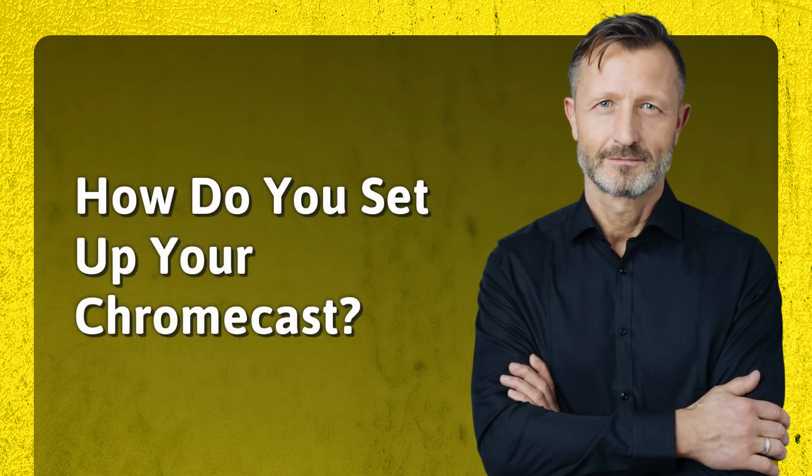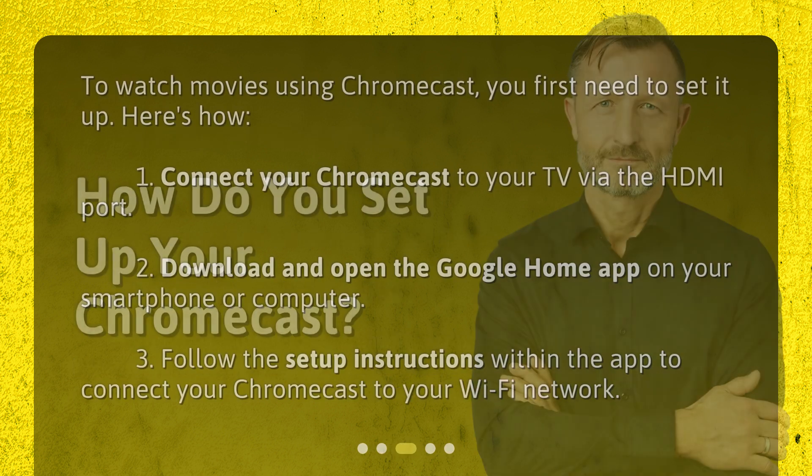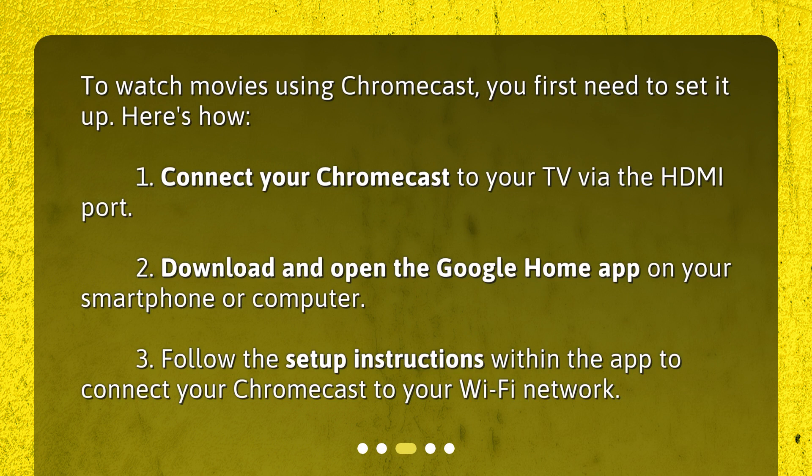How do you set up your Chromecast? To watch movies using Chromecast, you first need to set it up. Here's how: 1. Connect your Chromecast to your TV via the HDMI port. 2. Download and open the Google Home app on your smartphone or computer. 3. Follow the setup instructions within the app to connect your Chromecast to your Wi-Fi network.